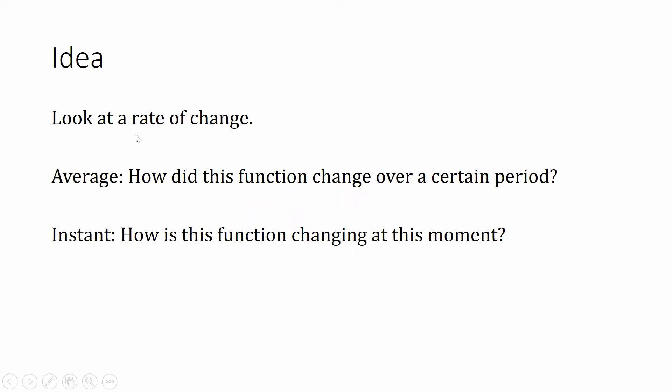The idea is that we're going to look at a rate of change. We start with looking at an average rate of change, which answers the question: how did this function change over a certain period of time? An instantaneous rate of change asks the question: how is this function changing at this very moment — what is the function doing at this specific moment?